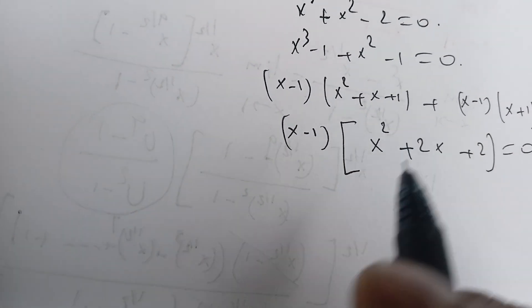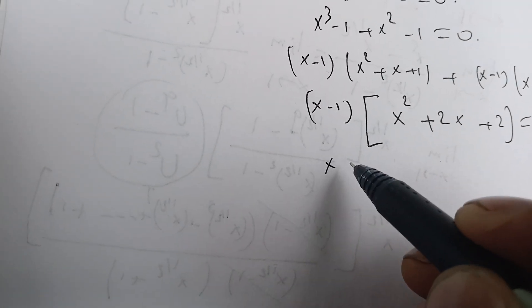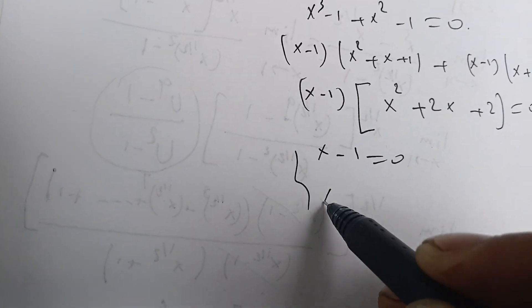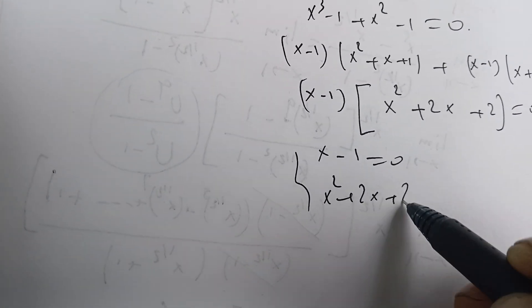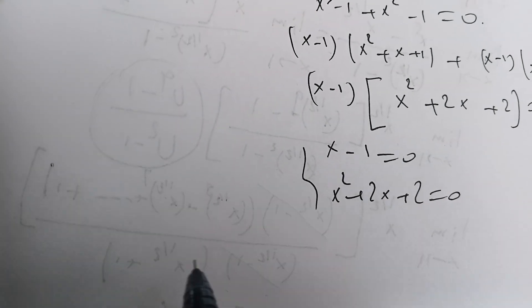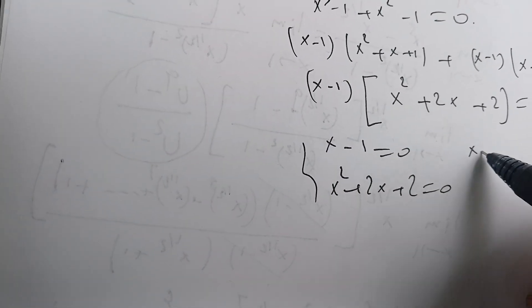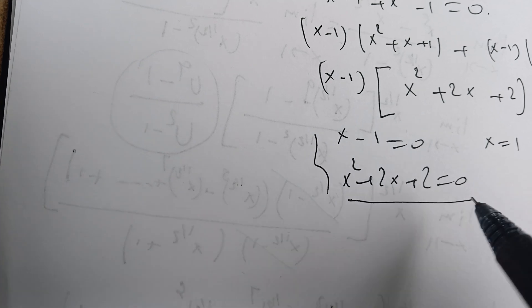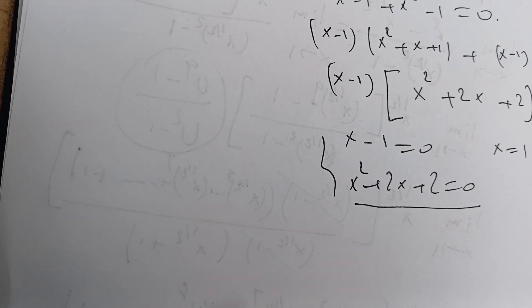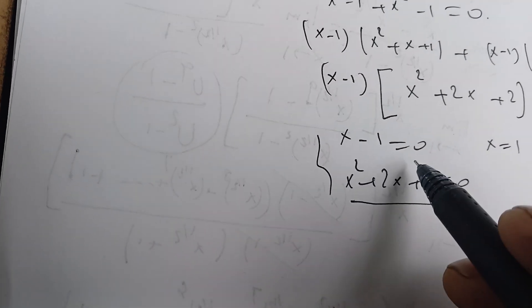So now the solutions are x minus 1 equals 0, or x squared plus 2x plus 2 equals 0. This first equation gives us that x is 1. What about this one here?